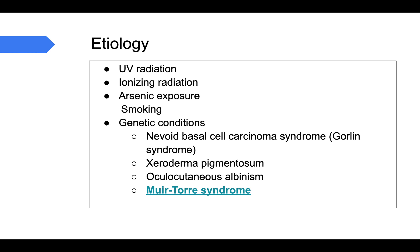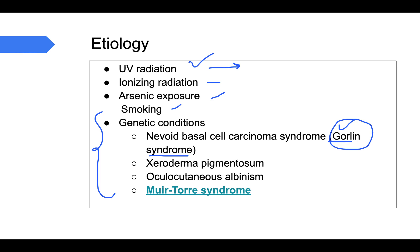The etiology includes UV radiation — a very important cause — ionizing radiation, arsenic exposure, and smoking. Very important etiological factors are certain genetic conditions: nevoid basal cell carcinoma syndrome, also known as Gorlin syndrome (whose pathogenesis we will discuss shortly), xeroderma pigmentosum, oculocutaneous albinism, and Muir-Torre syndrome.